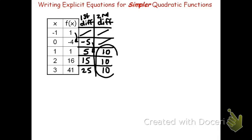Looking at the second differences, I can see what my coefficient of the x squared will be. Half of 10 is 5, so I know this equation will take the form f of x equals 5x squared.